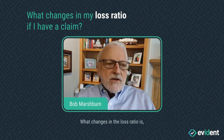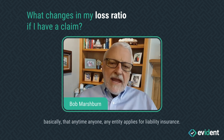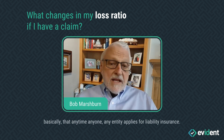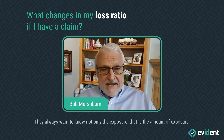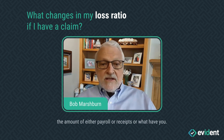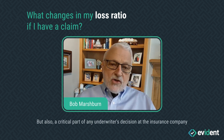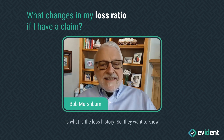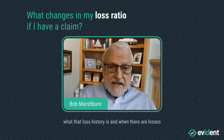What changes in the loss ratio is that anytime any entity applies for liability insurance, they always want to know not only the exposure — the amount of payroll or receipts or what have you — but also a critical part of any underwriter's decision at the insurance company is what is the loss history. So they want to know what that loss history is.